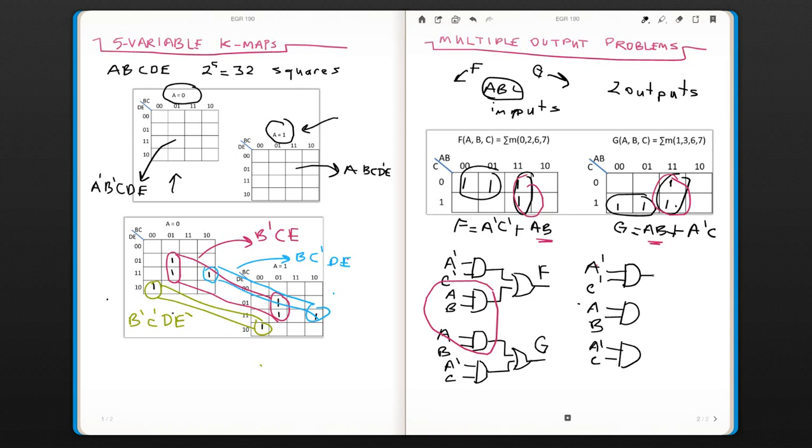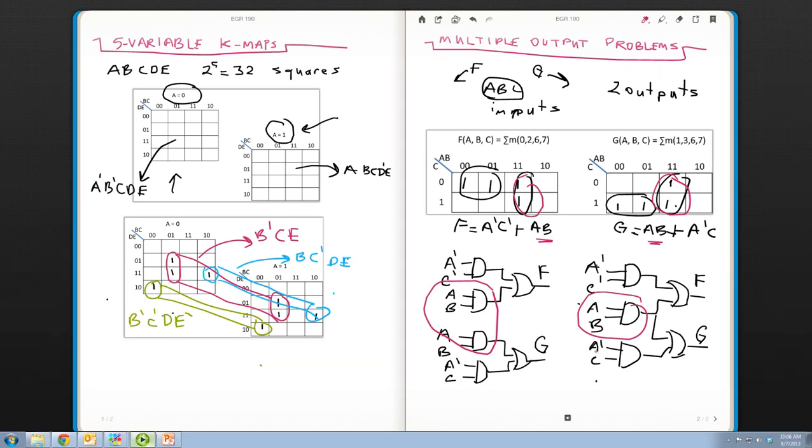So this is gonna go to an OR gate that will give us F. And this again will go to another OR gate which will give us G. So we use the same gate for both inputs, so there is one less gate here.